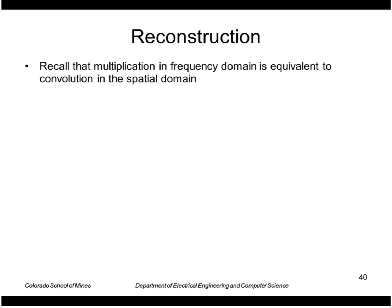How do you reconstruct the image from the samples? Recall that for our sampled function it had a transform that looked like this, and the equivalent to that was the set of samples in the spatial domain.